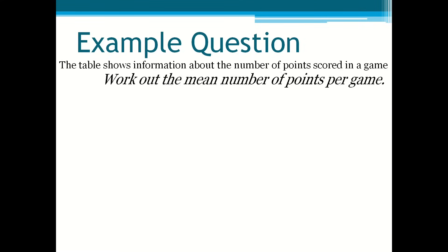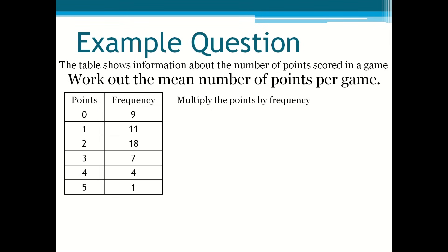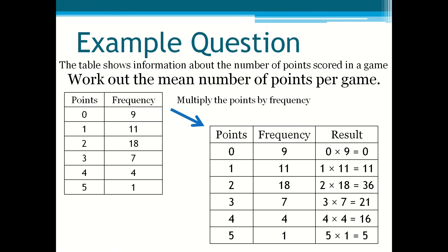Then afterwards, you have to multiply the points by the frequency. What you have to do is draw another column next to frequency to put the results in. So 0 times 9, 1 times 11, 2 times 18, 3 times 7, 4 times 4 and 5 times 1.